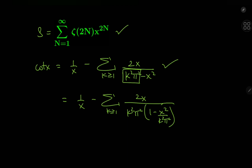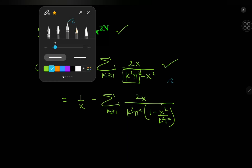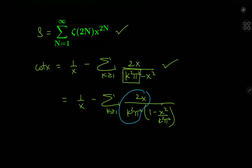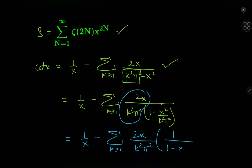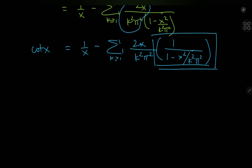Taking this 2x/k²π² term into consideration, we're writing this as 1/x minus the sum over k of 2x divided by k²π² times the reciprocal of (1 minus x²/k²π²). This part of the structure just screams geometric series — but be careful with convergence here. Expanding the first few terms, in order for this to have a convergent geometric series, we need the absolute value of x to be less than π.